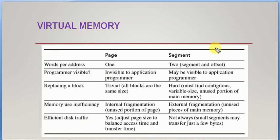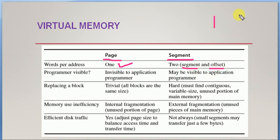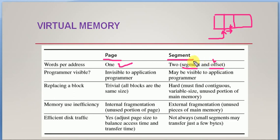Now we will compare paging and segmentation. In terms of words per address, in paging one word per address is stored, but in segmentation two words per address are required — one for the segment and one for the offset. From memory we need to find the particular segment, and from that segment we need to find the offset where the exact data resides within that segment.